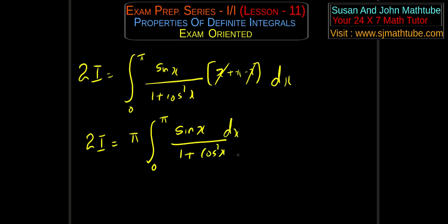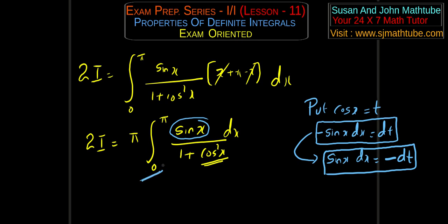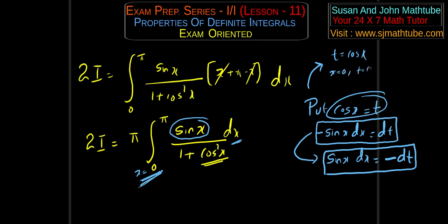Now we can see the function and its derivative are related. Put cos(x) = t, so −sin(x) dx = dt. The limits change: when x = 0, t = cos(0) = 1; when x = π, t = cos(π) = −1.